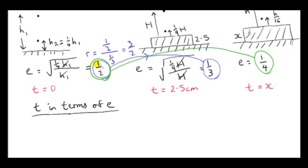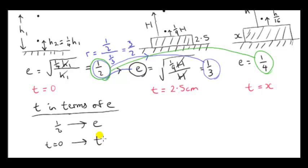Let's consider the reduction factor when e goes from one half to some arbitrary value e. A half is reduced by some factor to give e, and t goes from 0 to some general value t. So the reduction factor is one half divided by e, which equals 1 over 2e. So, in general, when e is one half and the thickness is 0, we find that R is 1 over 2e.